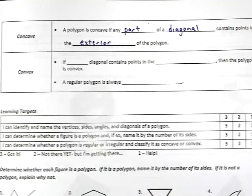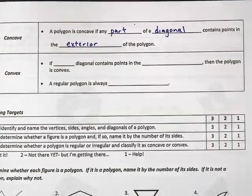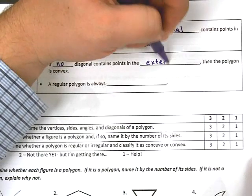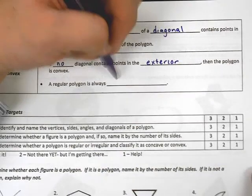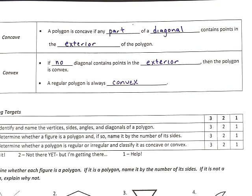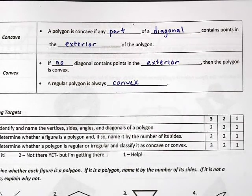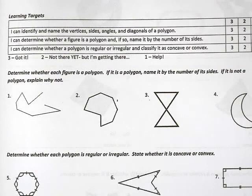For convex, it's basically the opposite. If no diagonal contains points in the exterior, then it's convex. We also say that a regular polygon always has to be convex — that could save you a little bit of time on a quiz or a test. The best way to really understand this is to jump in and start going back and forth with the notes to answer these questions.